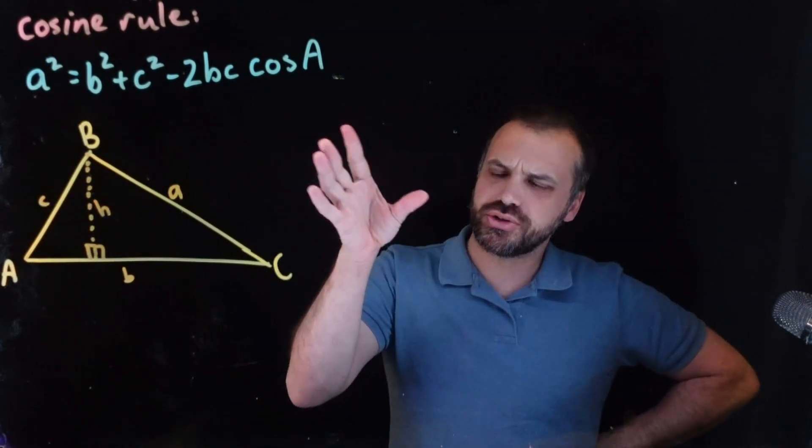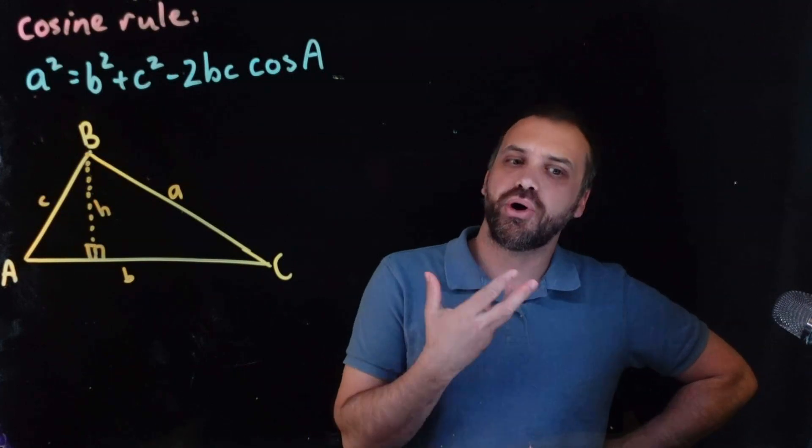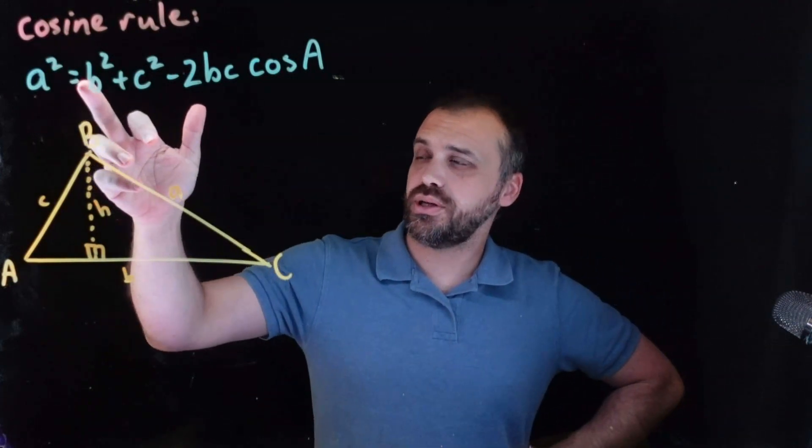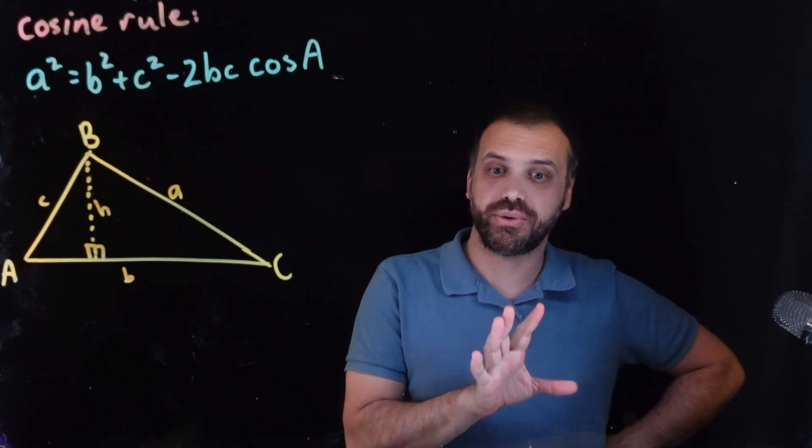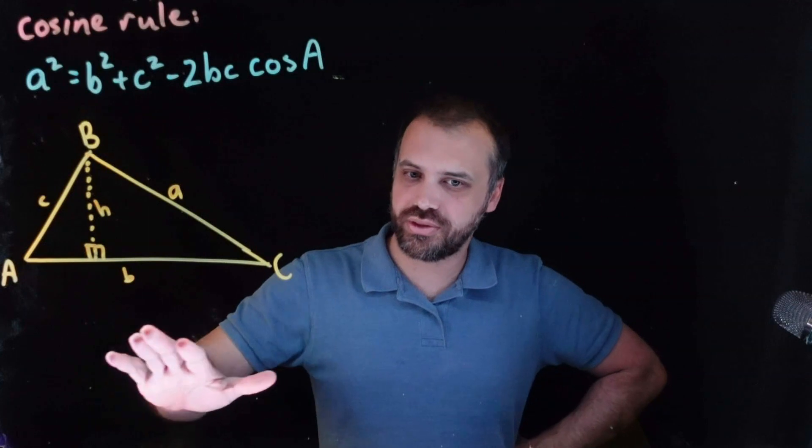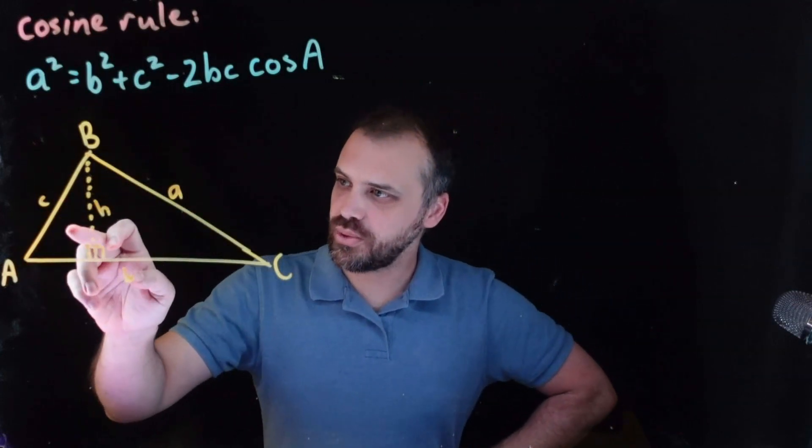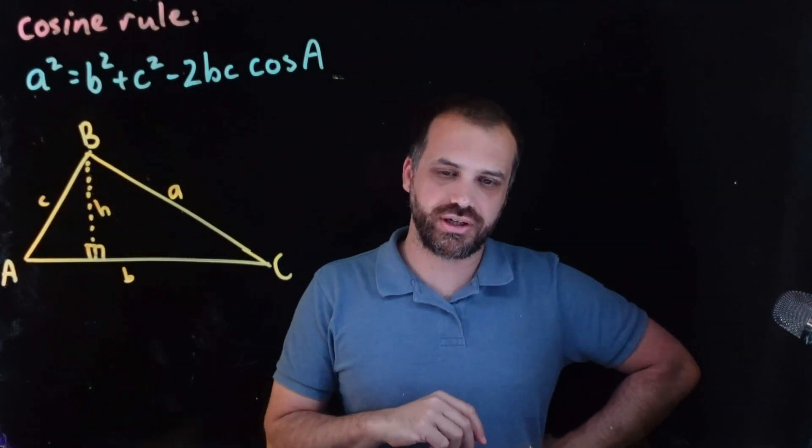Okay, look at the cosine rule for a second. What does it remind you of? A squared equals B squared plus C squared. I can see some Pythagoras stuff going on. And we can actually do some Pythagorasy type stuff with our two right angle triangles here.